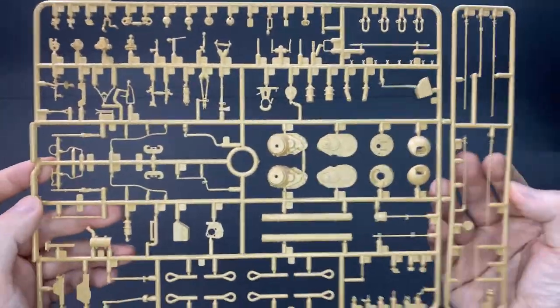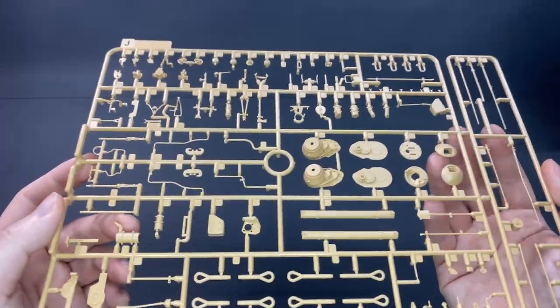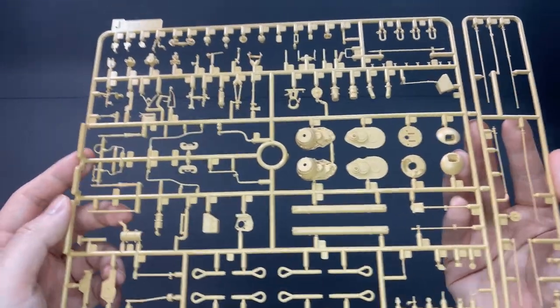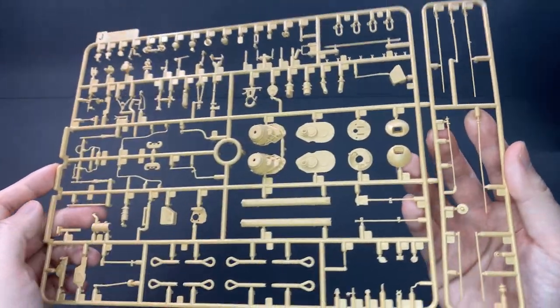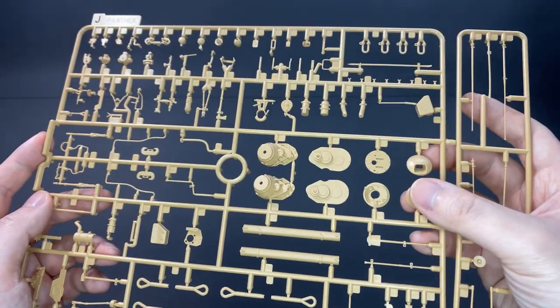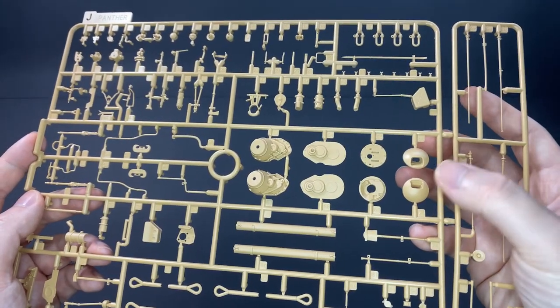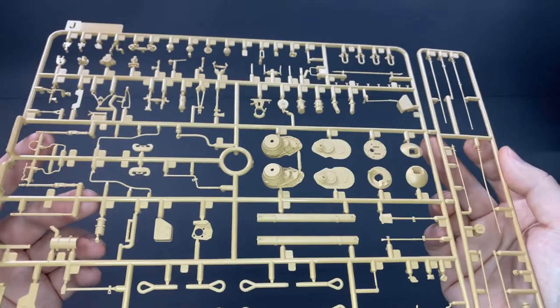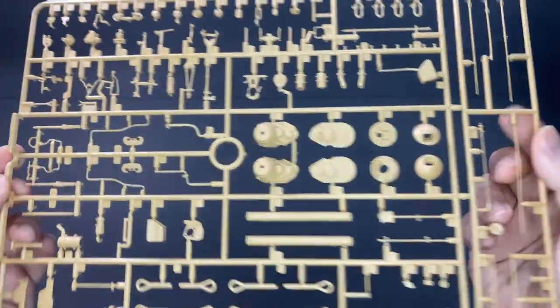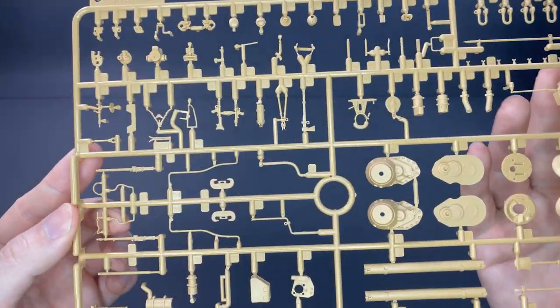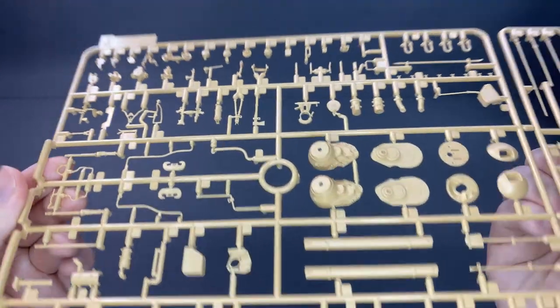Sprue J, mainly the exterior accessories like the tools, weapons, and whatnot. The cover for the machine gun may need some texturing. Other than that, I don't think I'm gonna need any detail parts for this kit. It's very sharply molded.